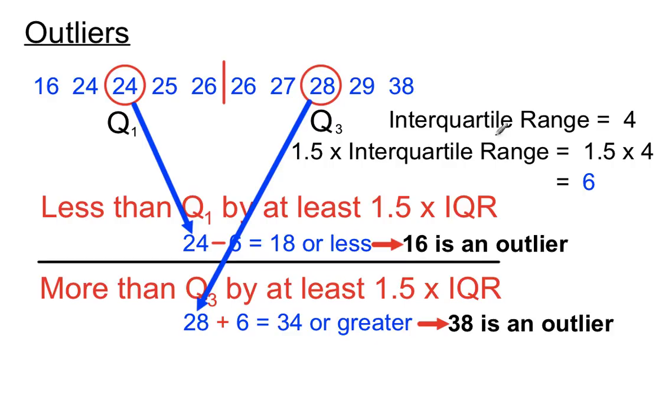By finding the interquartile range, multiplying it by 1.5, we can take that 6 off Q1 and get an indication of where the outliers are on the low side. We can add the 6 to Q3 and see how big a score has to be before we call it an outlier. We figured out that any scores of 18 or less in this particular set of data we can call outliers, and any scores 34 or bigger we can call outliers. So 16 and 38 were outliers as defined by the rules.